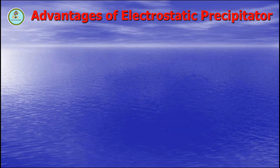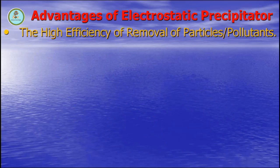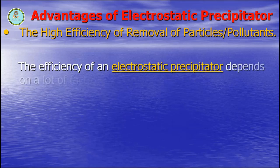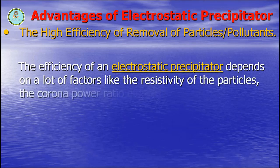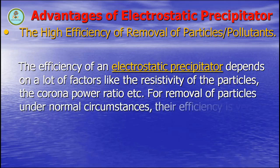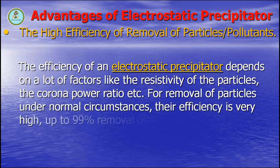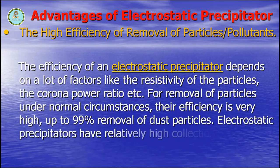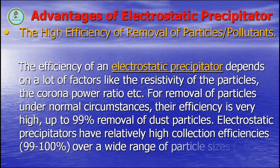The first advantage of electrostatic precipitators is the high efficiency of removal of particles and pollutants. The efficiency depends on factors like the resistivity of the particles and the corona power ratio. For removal of particles under normal circumstances, the efficiency is very high — up to 99 percent removal of dust particles. Electrostatic precipitators have relatively high collection efficiency over a wide range of particle sizes.